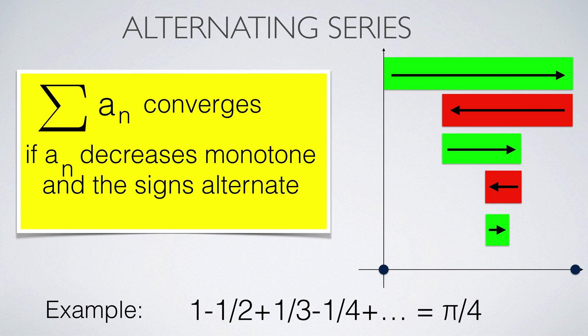For an alternating series, the terms decrease monotonically and the signs alternate. Such a sum always converges. You can see it visualized. The first term overshoots, adding the next undershoots, then we overshoot again, etc. The sum is squeezed between a lower bound getting larger and an upper bound which is getting smaller all the time. In the limit, we have a fixed value. An important example is the Leibniz series, where the limit is π/4. The computation of the limit is not always easy. In this case, it can be done by Fourier or power series techniques.